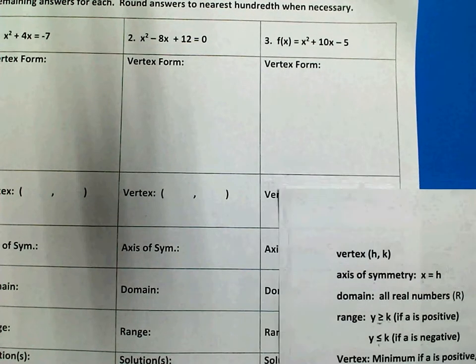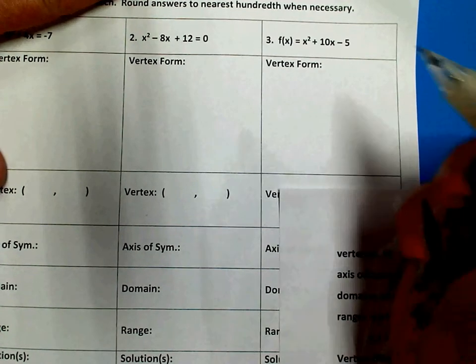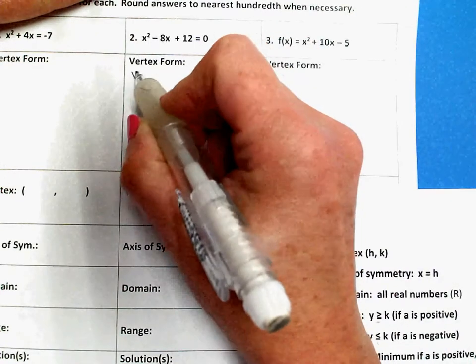Alright, we're going to get problem number two into vertex form. To get it into vertex form, I need to do this completing the square business.